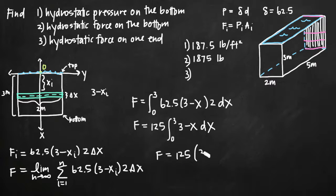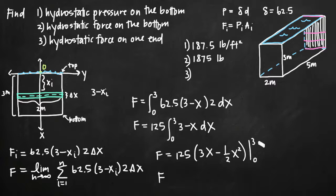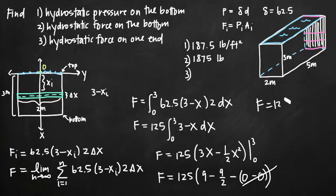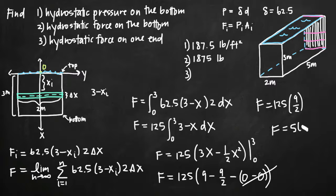Evaluating the integral, the antiderivative of (3 minus x) is 3x minus one-half x squared, evaluated from 0 to 3. Plugging in 3: 3 times 3 is 9, minus one-half times 9 is 9 halves. Plugging in 0 gives 0. So we get 125 times (9 minus 9/2), which equals 125 times 9/2, giving us 562.5 pounds. That is the hydrostatic force against one end of the tank.